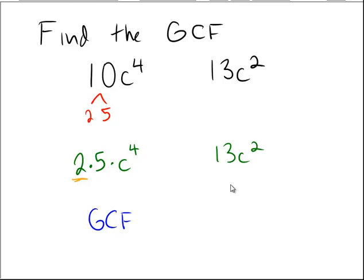So that's not a viable factor, because it's not common. Same goes for 5. We have a 5 on the left, but we do not have a 5 on the right. 13 is on the right, but it's not on the left. So none of the numbers end up being common factors here.